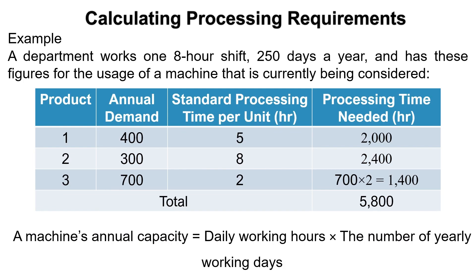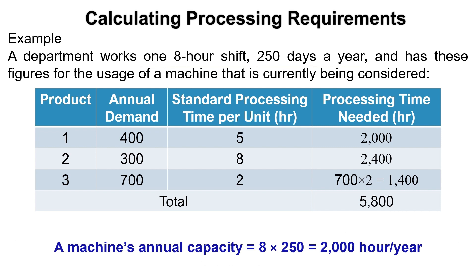Now calculate the annual capacity for one machine by multiplying the daily working hours by the number of yearly working days. It is given that the department works one 8-hour shift daily for 250 days per year. So, a machine's annual capacity equals 8 × 250 = 2,000 hours per year.